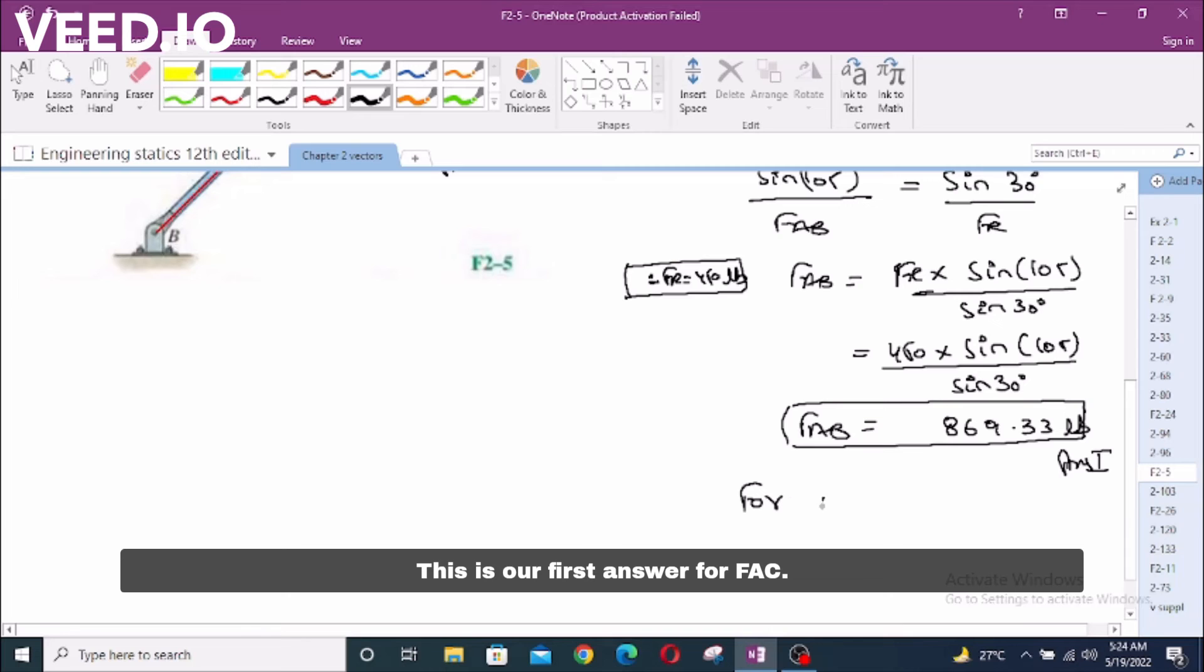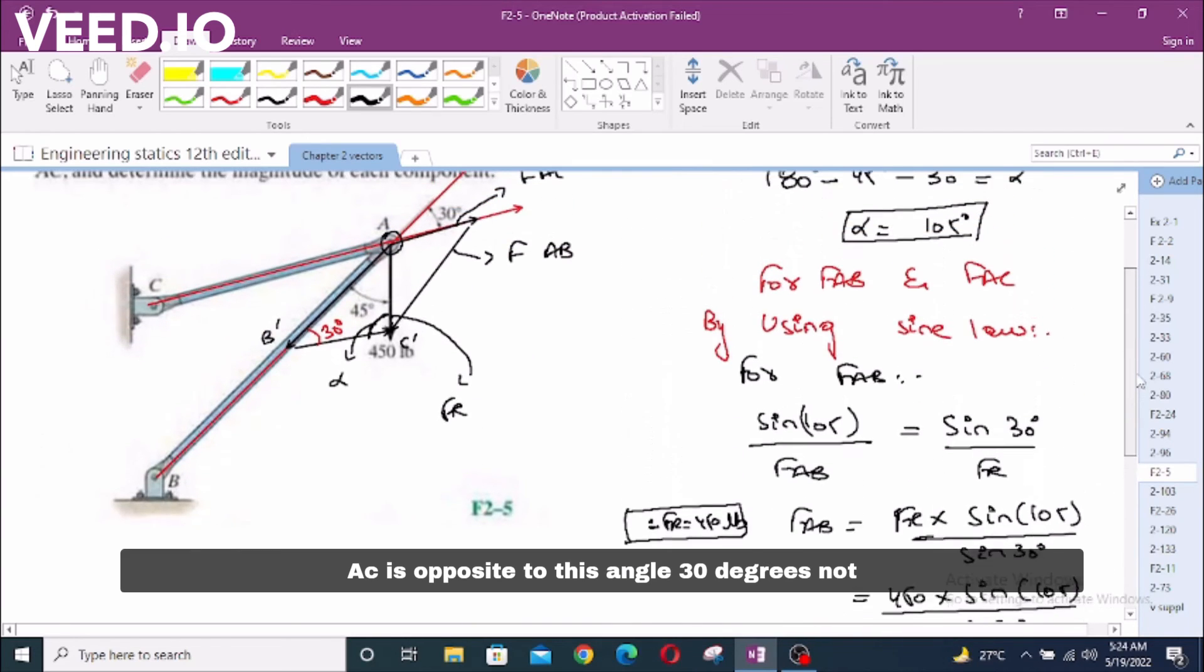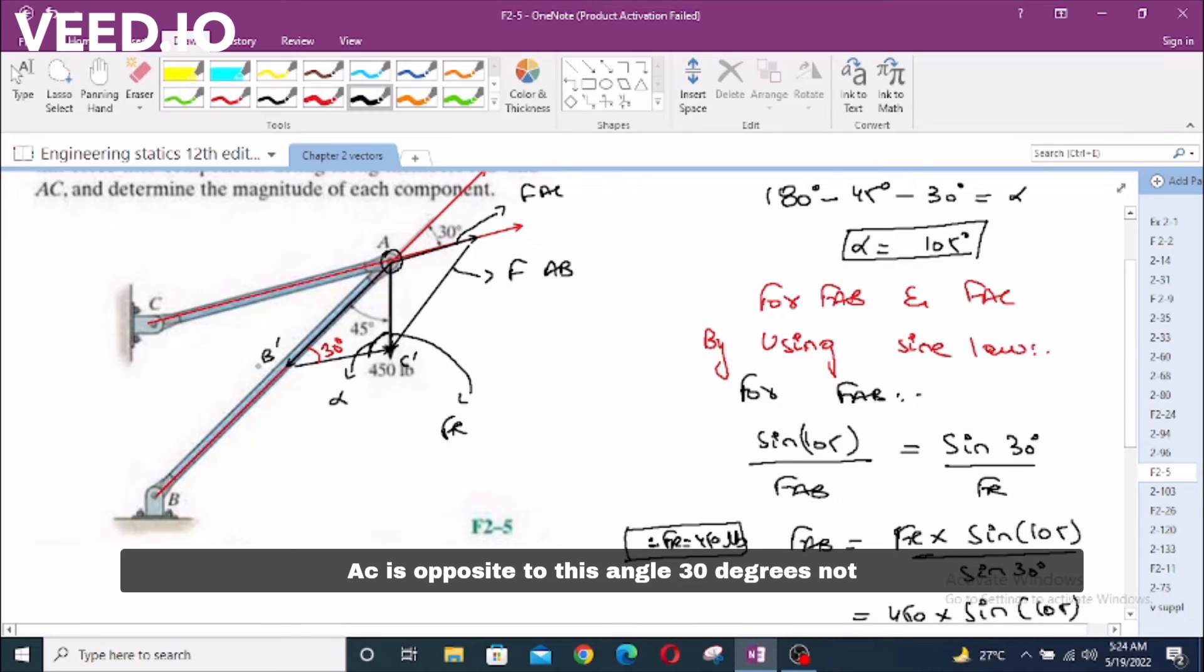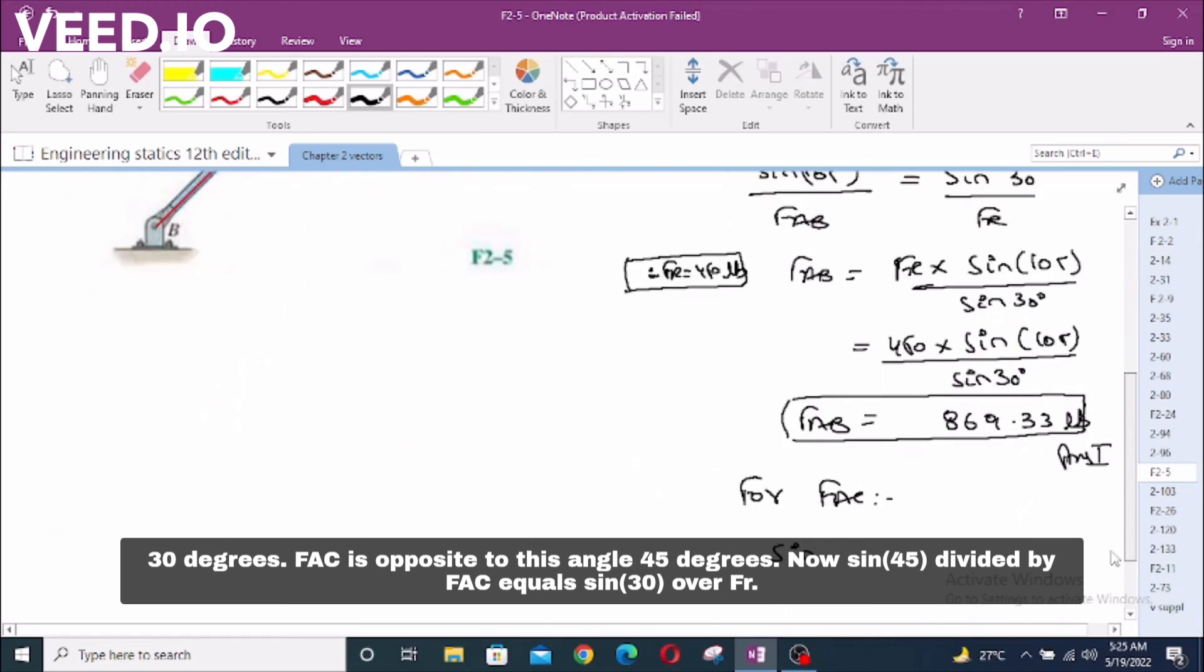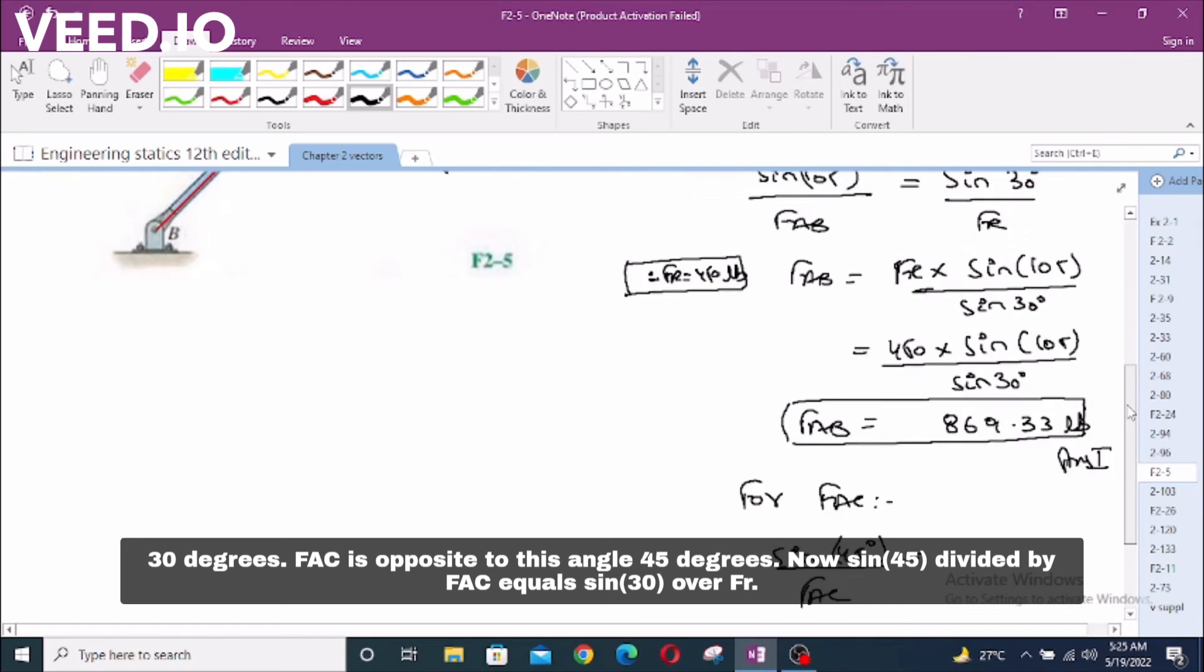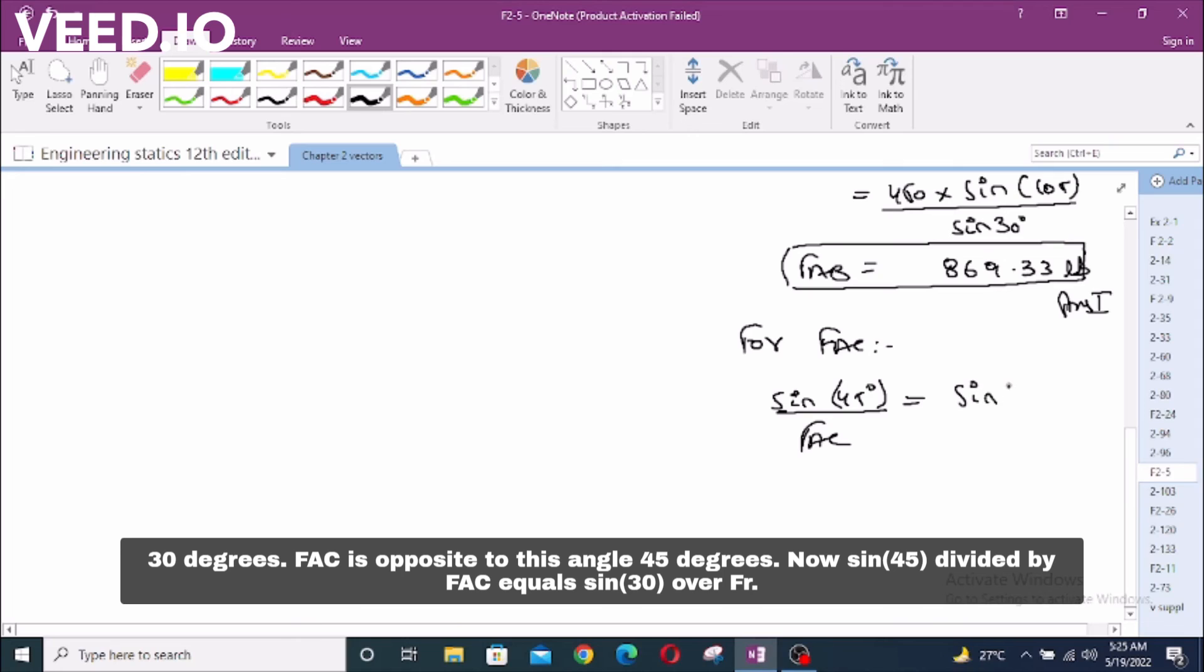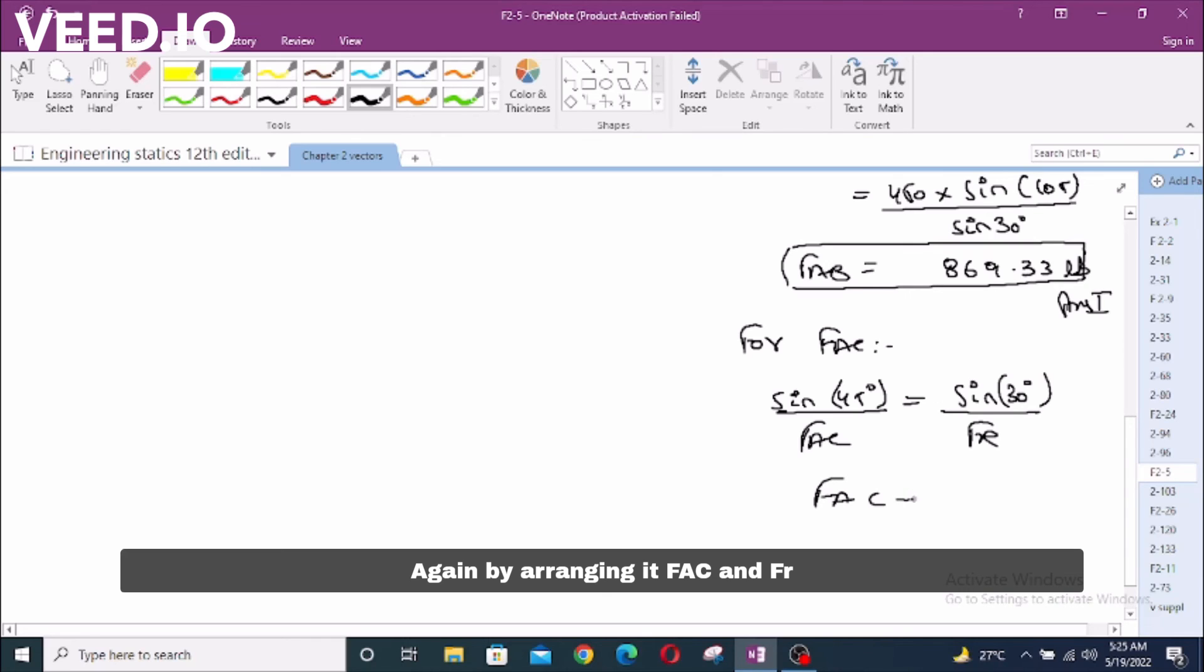For F_AC, again we are going to use sine law. F_AC is opposite to this angle 45 degrees. This angle F_AC equals sin 30 over FR. Again by arranging it, F_AC, and F equals 450 lbs which is given.